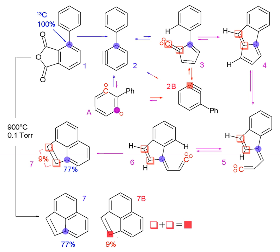An isotopic tracer, also called an isotopic marker or isotopic label, is used in chemistry and biochemistry to help understand chemical reactions and interactions. In this technique, one or more atoms of the molecule of interest is substituted for an atom of the same chemical element but of a different isotope, like a radioactive isotope used in radioactive tracing.